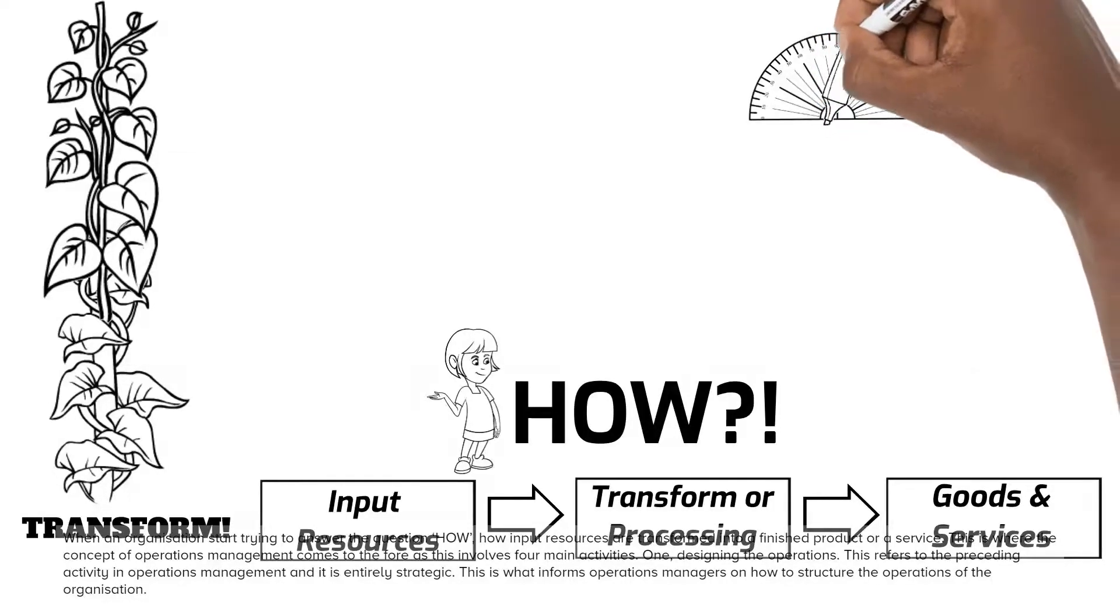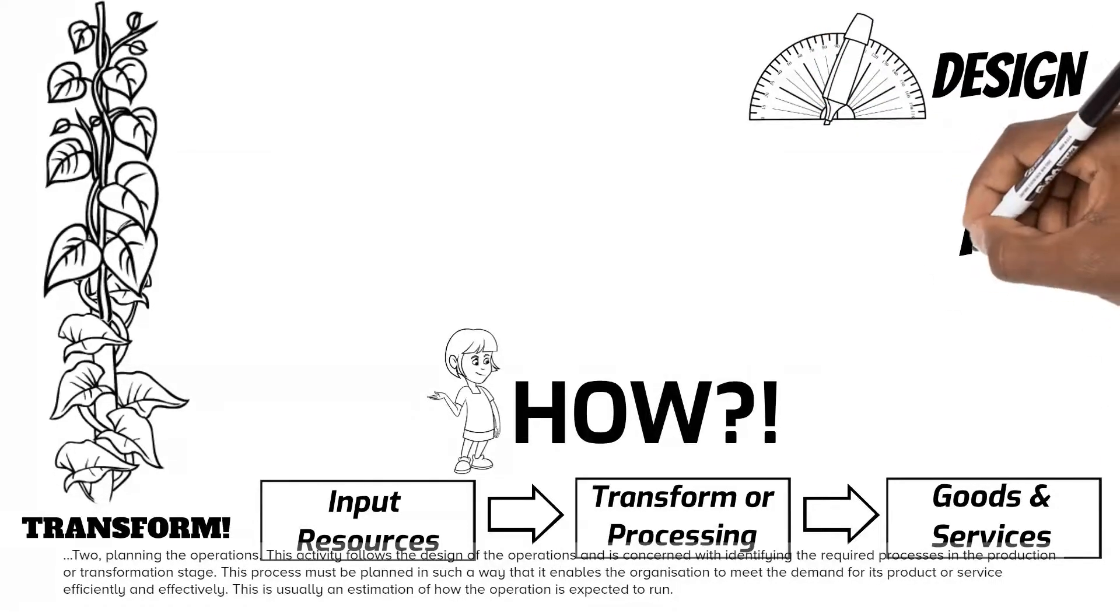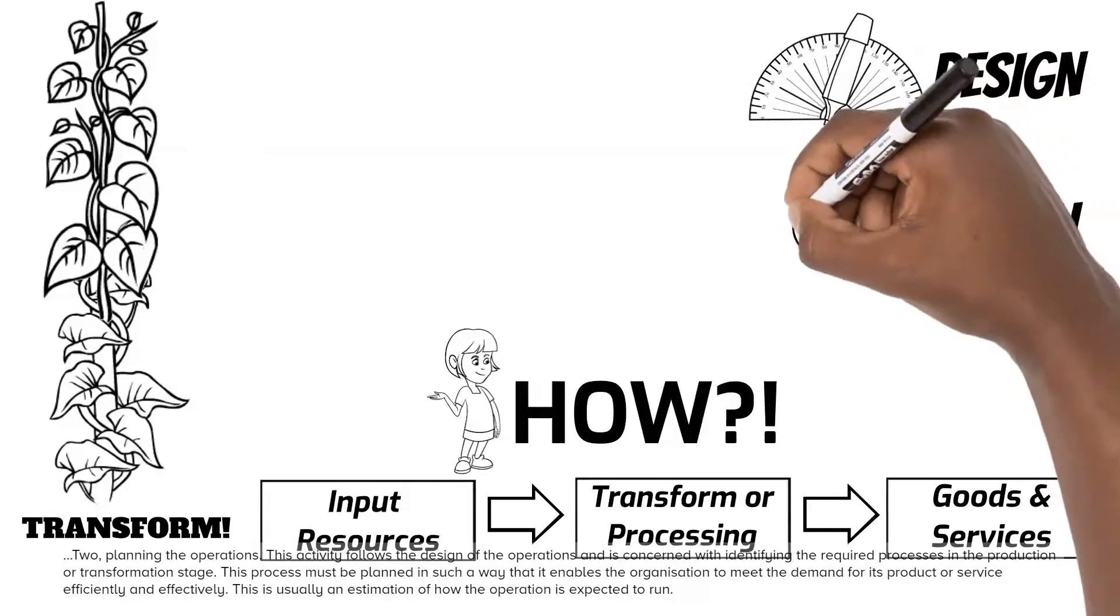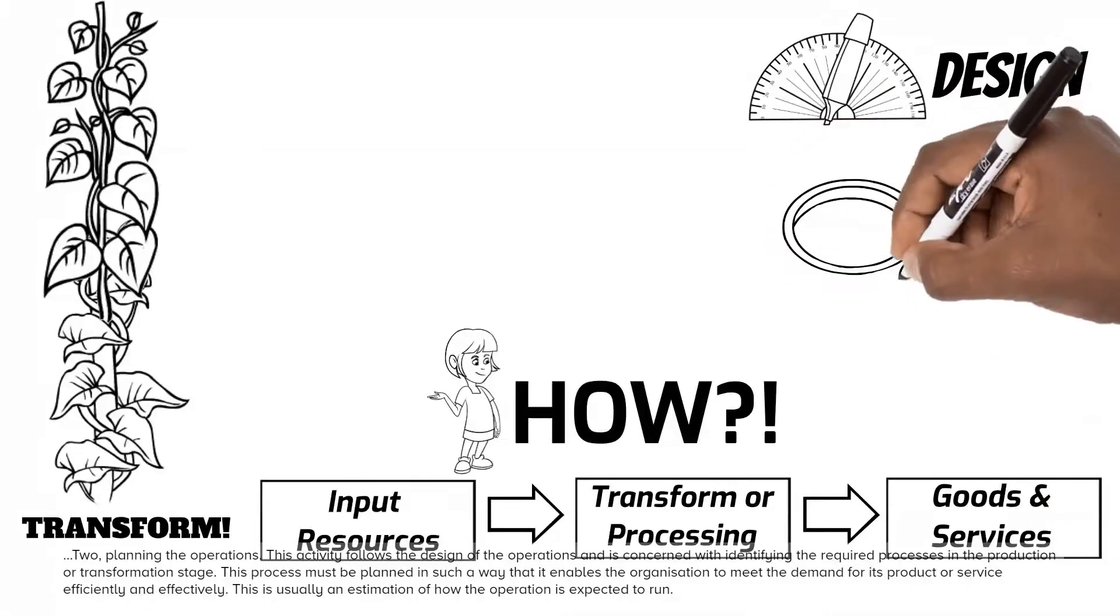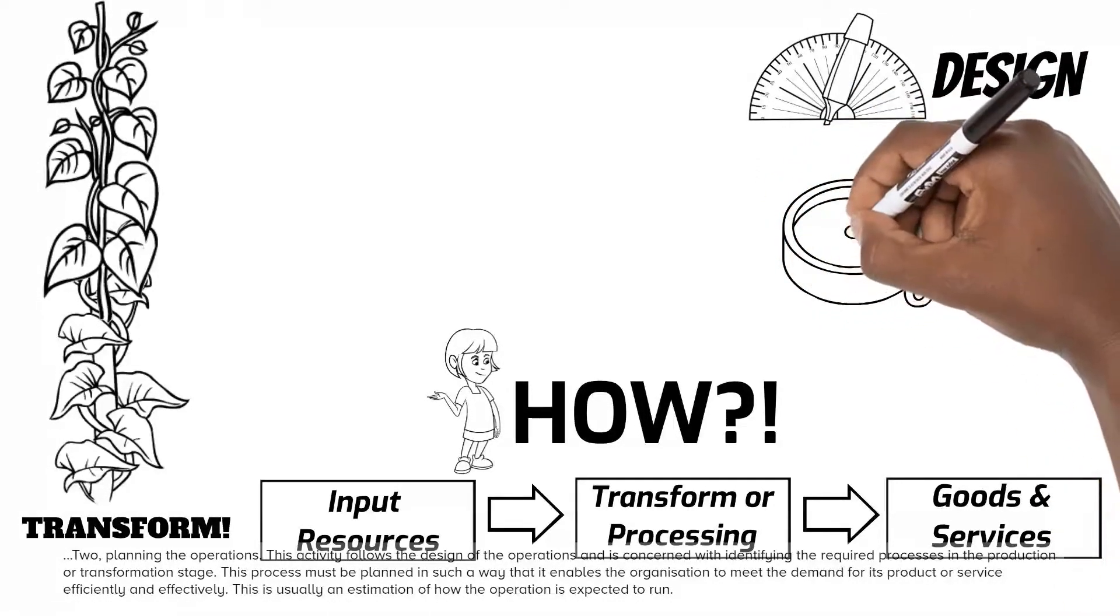Two, planning the operations. This activity follows the design of the operations and is concerned with identifying the required processes in the production or transformation stage. This process must be planned in such a way that it enables the organization to meet the demand for its product or service efficiently and effectively. This is usually an estimation of how the operation is expected to run.